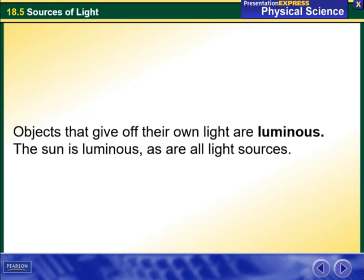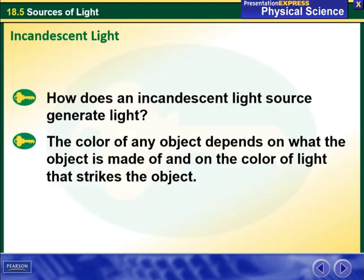Objects that give off their own light are luminous. The sun is luminous, as are all light sources. How does an incandescent light source generate light?